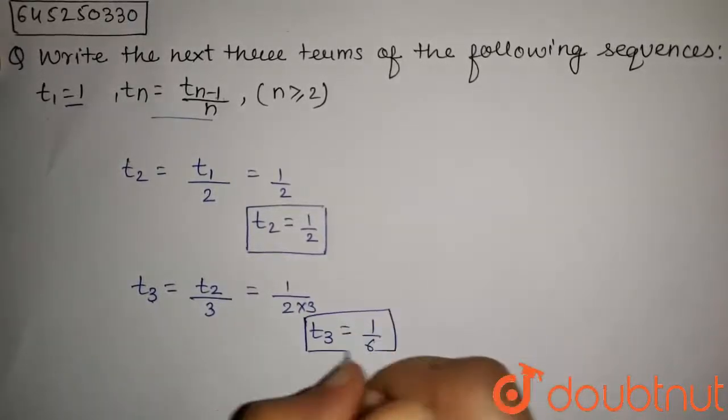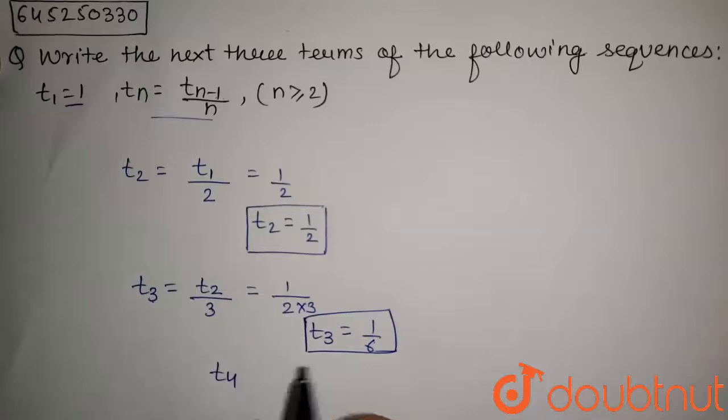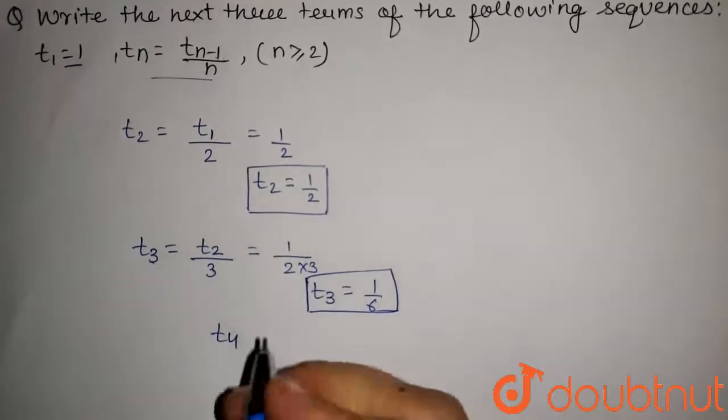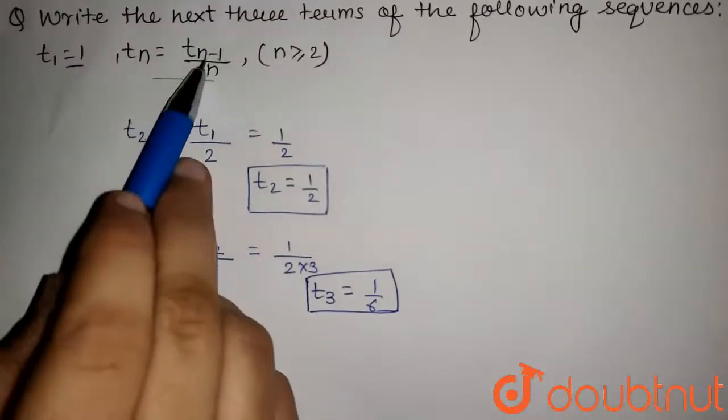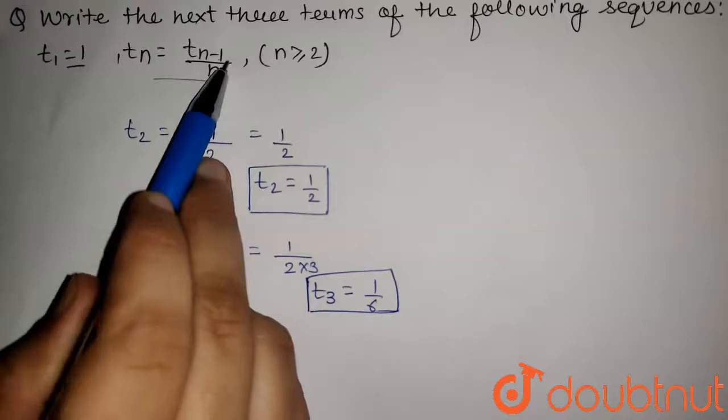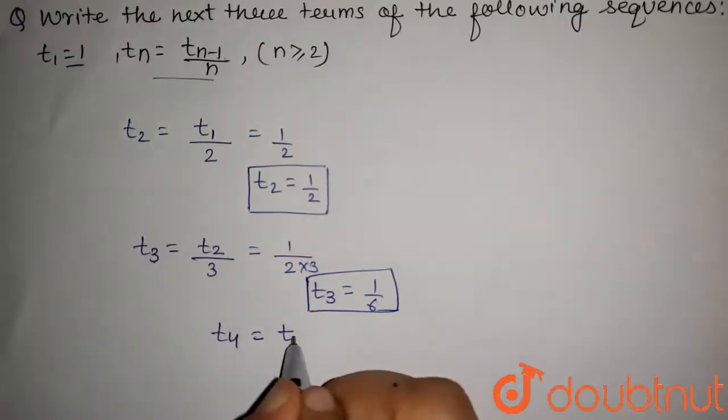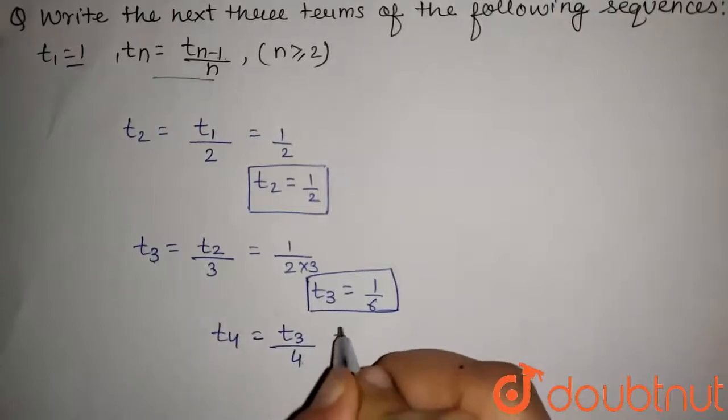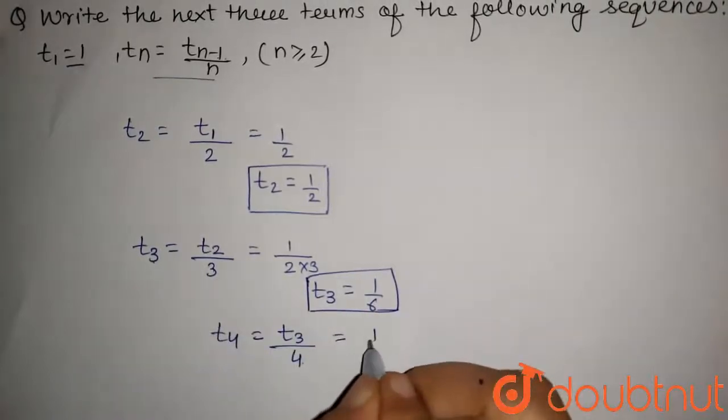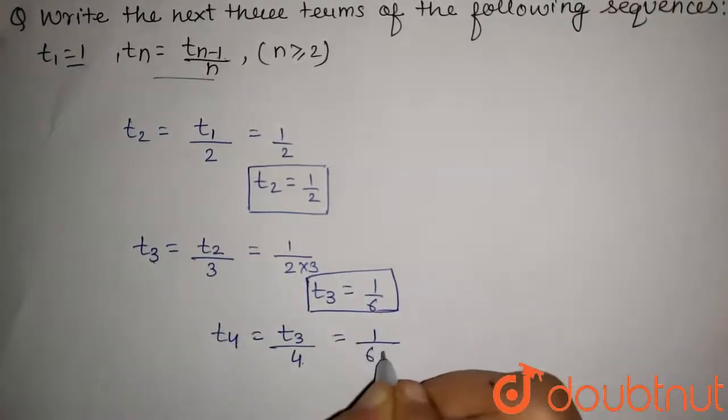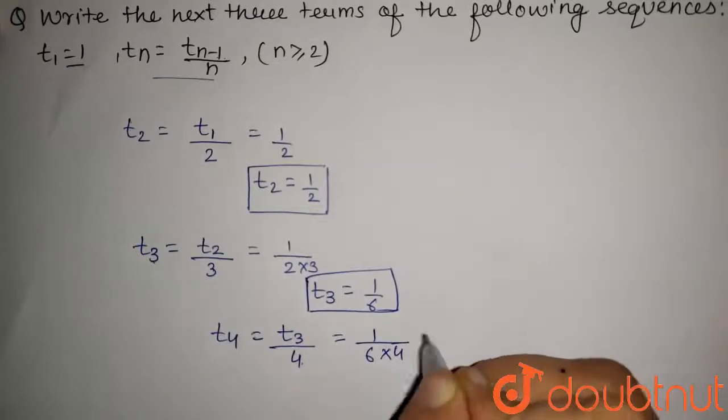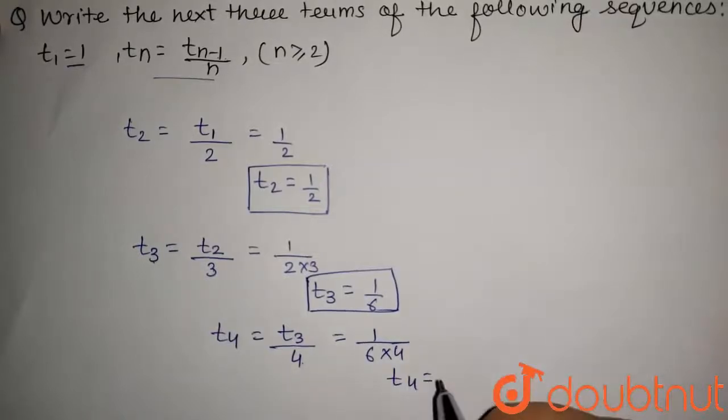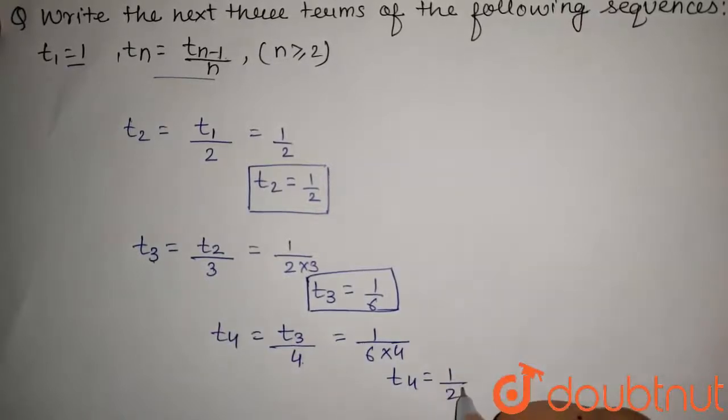Now we have to find the fourth term. The fourth term T4 will be equal to T4 minus 1. 4 minus 1 will be 3, so this will be T3 upon n that is 4. So this will be T3 by 4. On putting values, we get T3 is 1 by 6, so this will be 1 by 6 upon 4, that is into 4 in here. So from this we get the fourth term as 1 by 24.